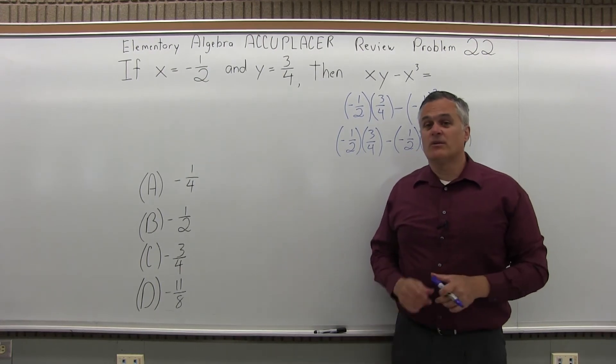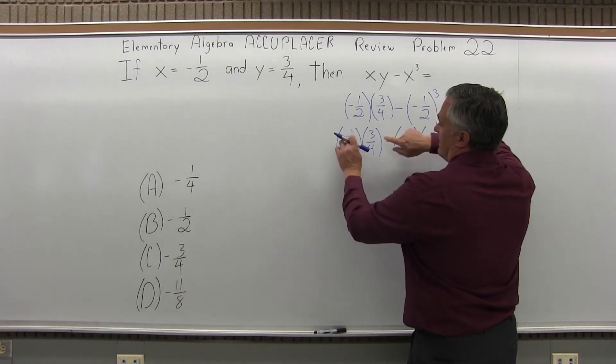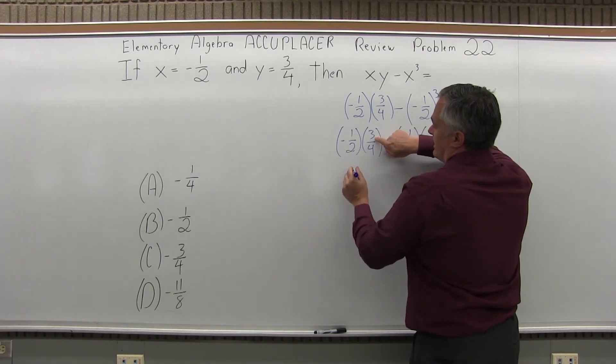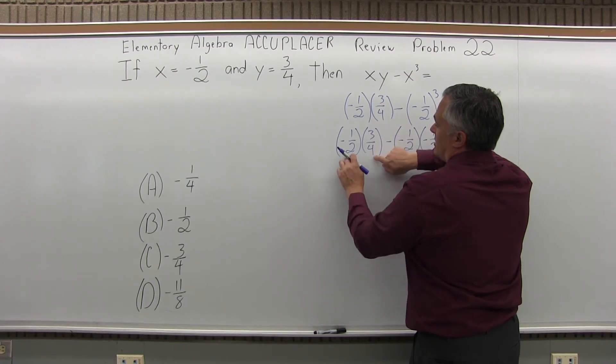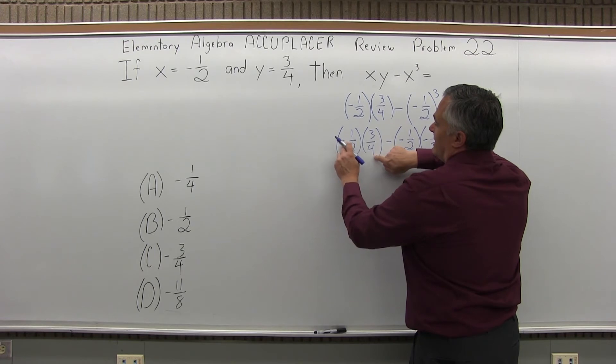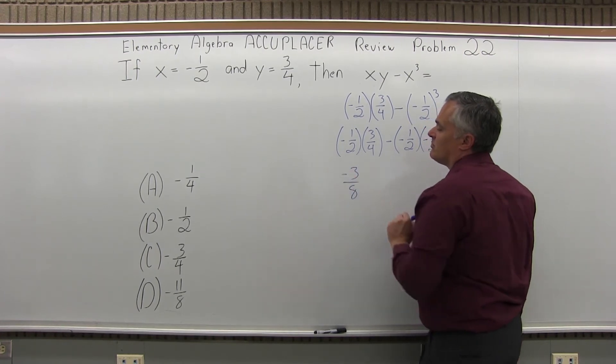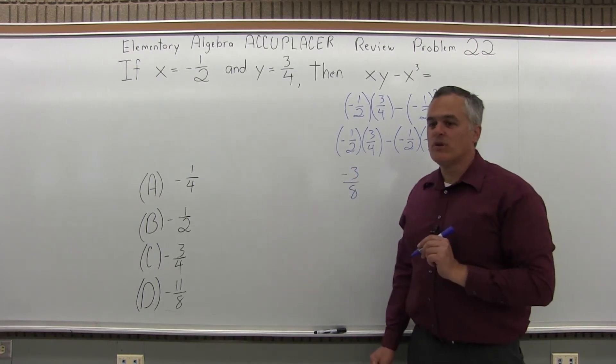Now I can go ahead and do my multiplies. So the multiplication product on the left, I'm going to go top times top: one times three is three. Bottom times bottom: two times four is eight. And I have a negative times a positive, so negative. So that's going to be negative three-eighths. You can put the negative in front of the fraction bar or up in the numerator. I like it up in the numerator actually.